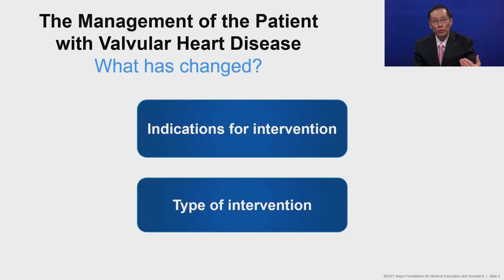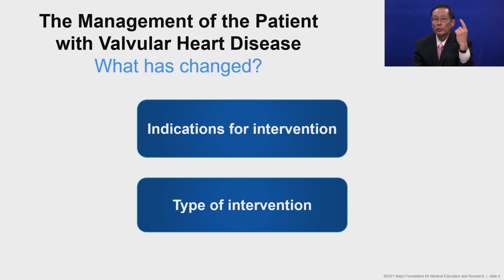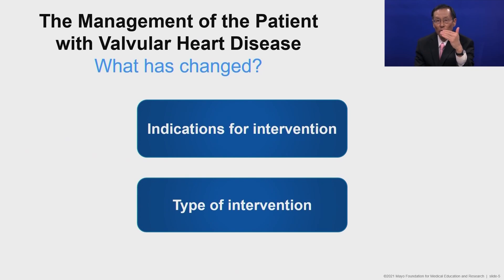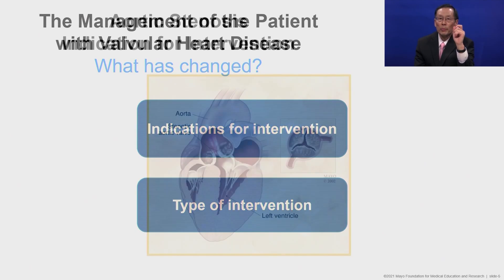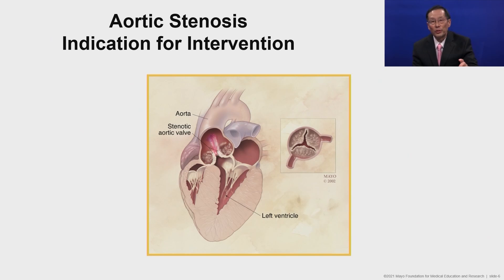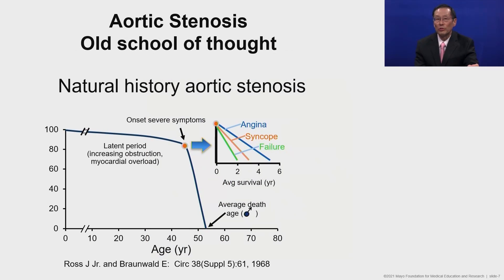What's new and what's changed in the management that's going to be very important for your practice? Number one is going to be the indications for intervention, and number two will be the type of intervention, and at the very end we'll give you a little potpourri of some of the important practical clinical aspects that have changed. Let's talk about the indication for intervention and start with aortic stenosis, since that is one of the most common valvular heart diseases that you'll see today.